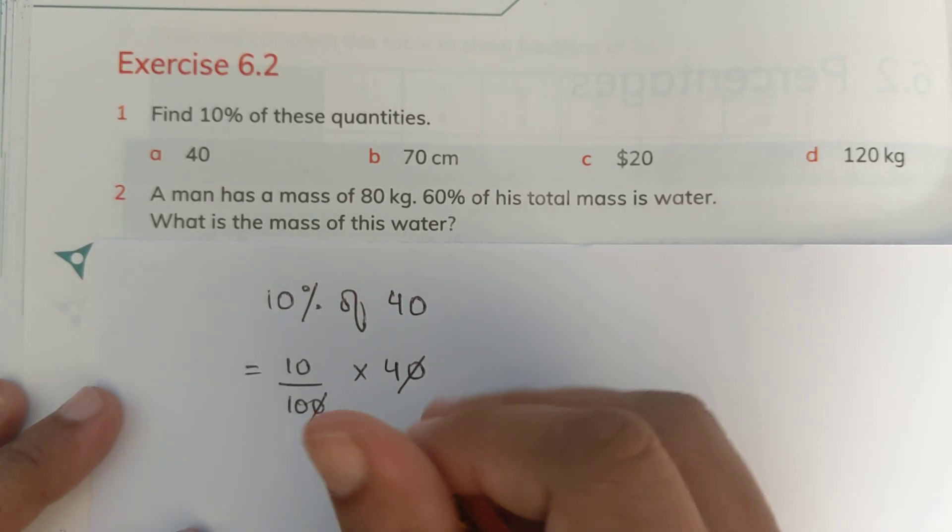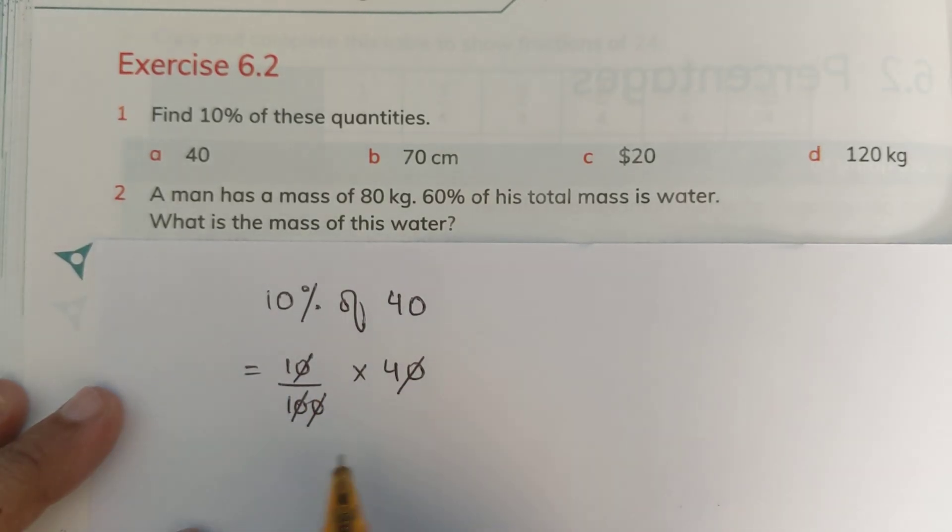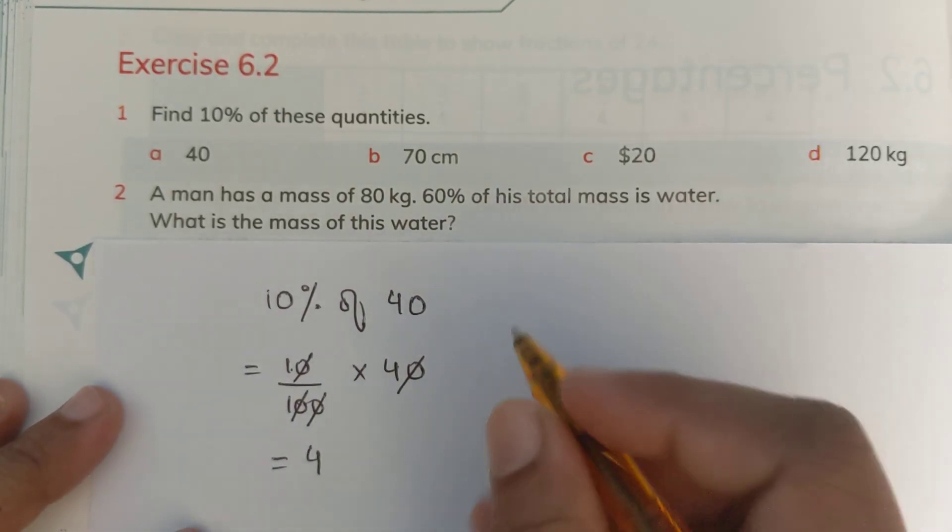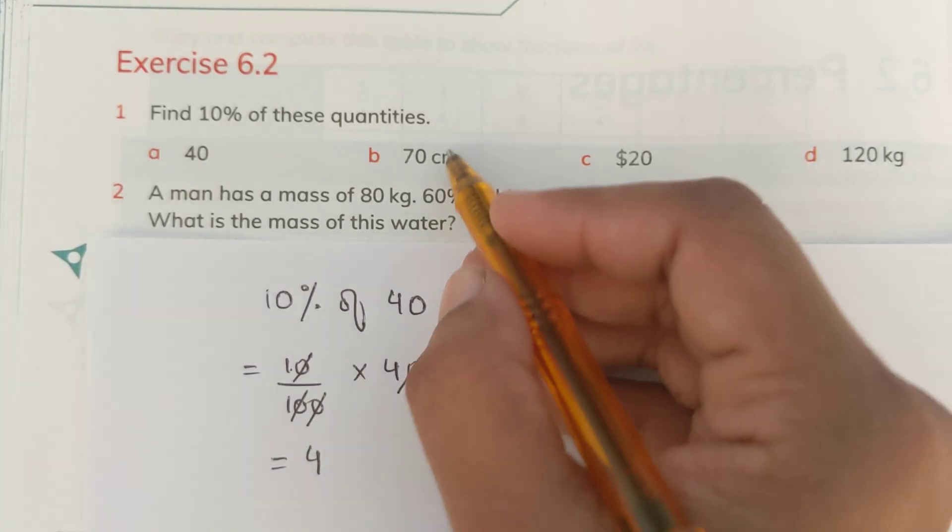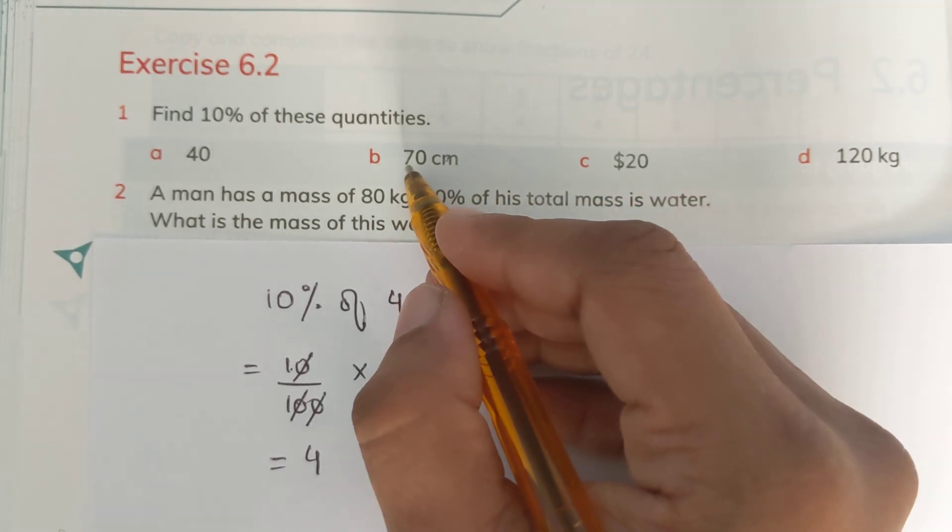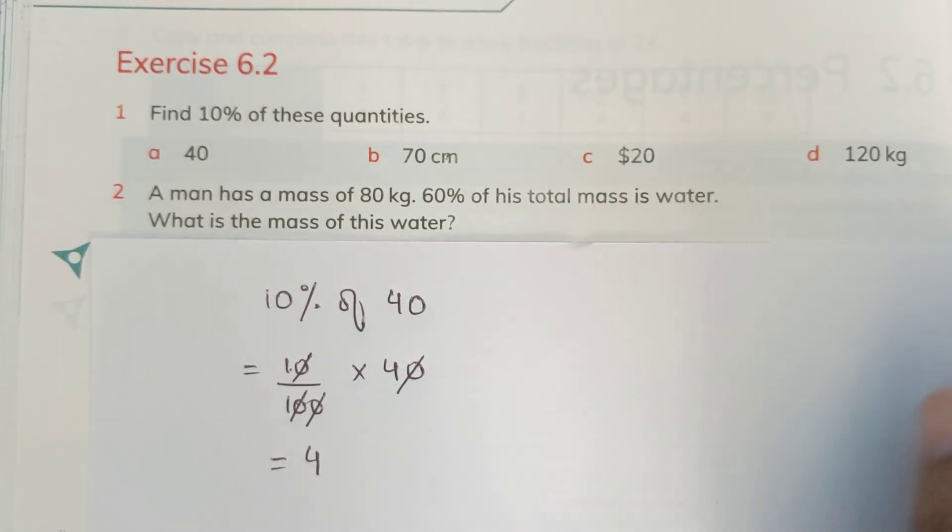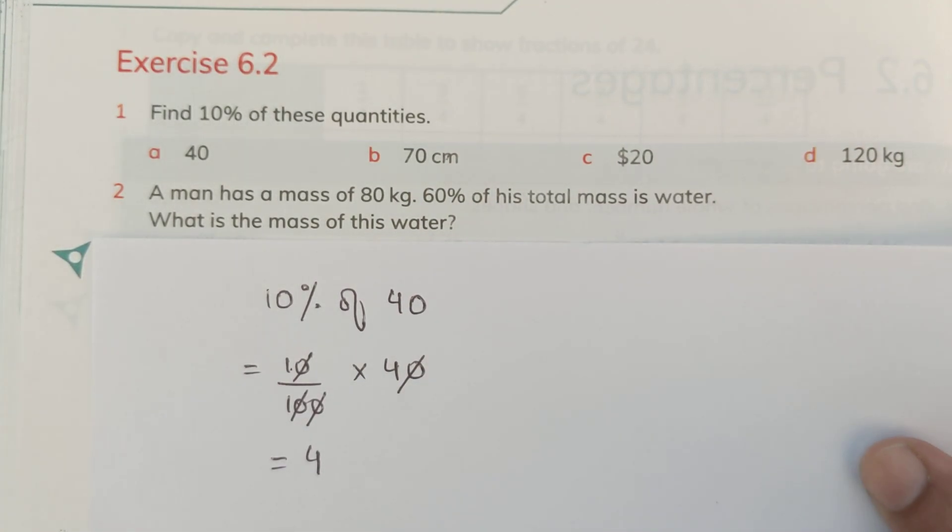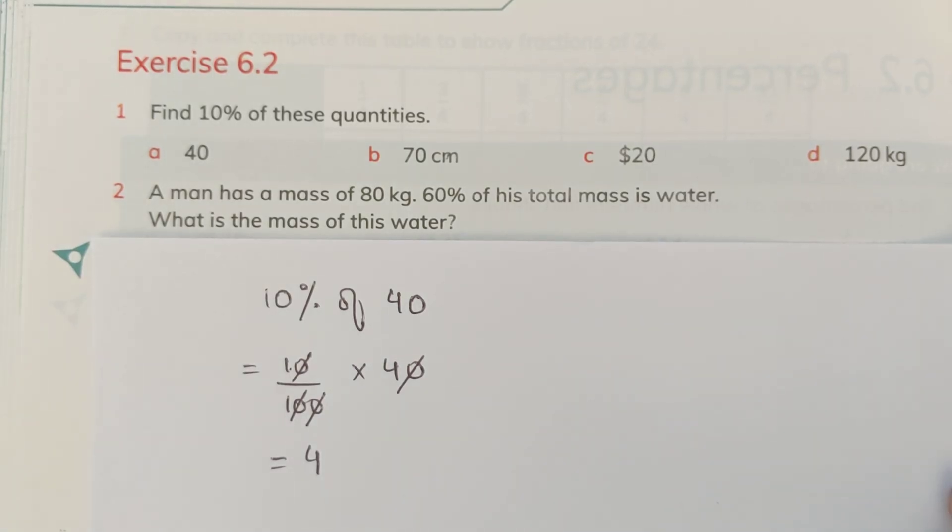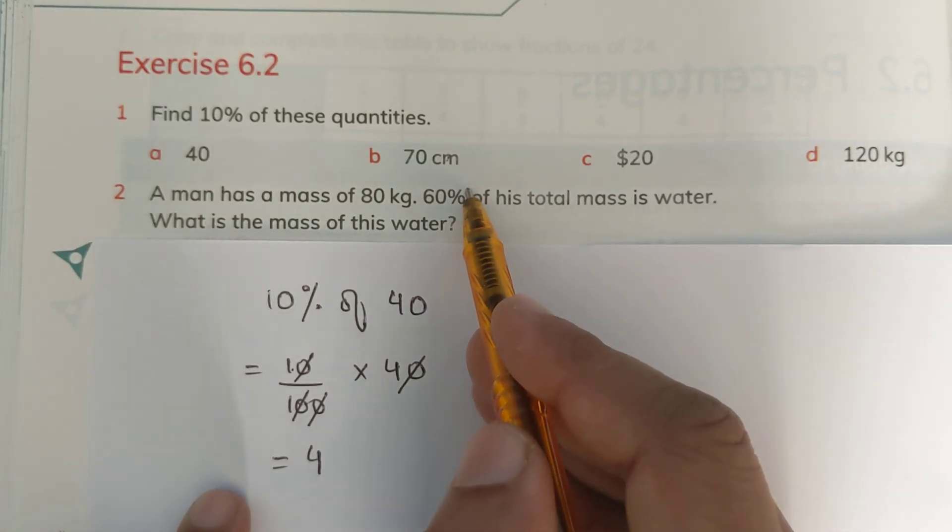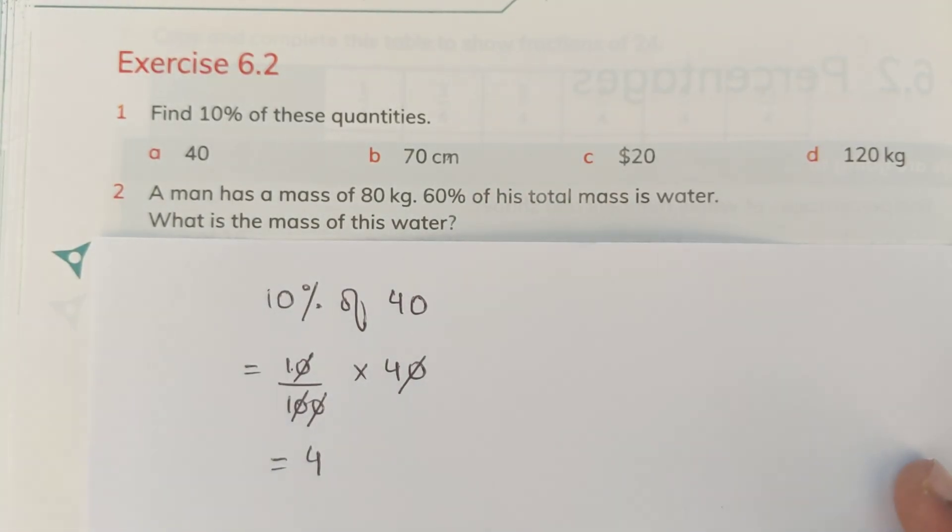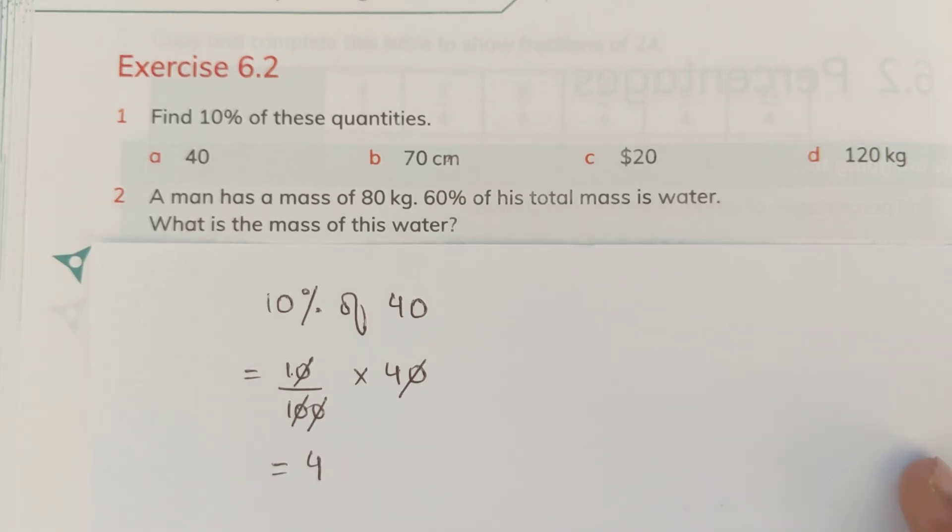So 10 upon 100 multiply by 40. 1 0 cuts, 1 0 in the denominator. Another 0 cuts, another 0. What are we left with? 1 multiply by 4 and that's 4. So 10% of 40 is 40 divided by 10 equals 4. Similarly, 70 centimeters divided by 10 equals 7. 20 dollars divided by 10 equals 2 dollars. 120 kgs divided by 10 equals 12 kgs. So, this is how we are supposed to solve it and we must know that anything where we have to find out 10% of something, we simply have to divide it by 10.